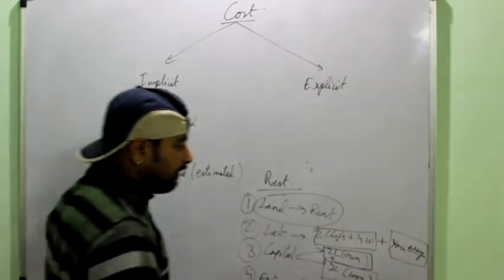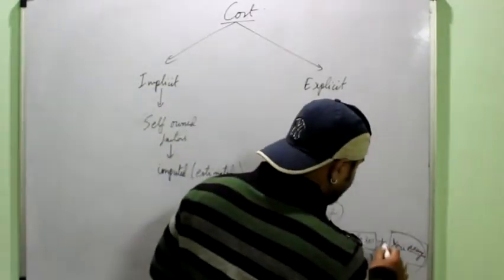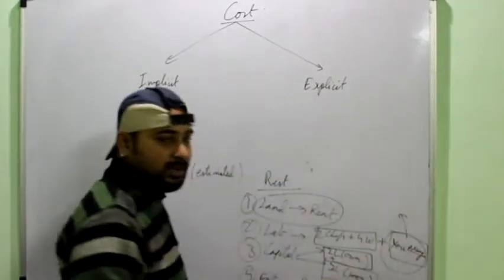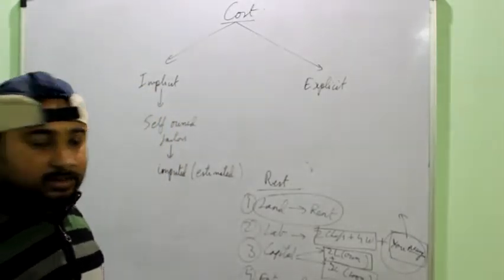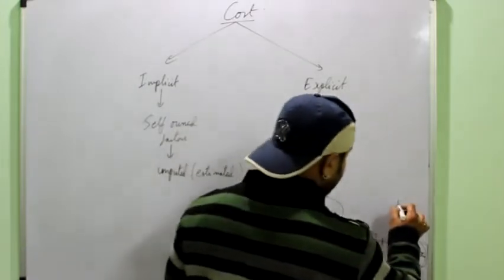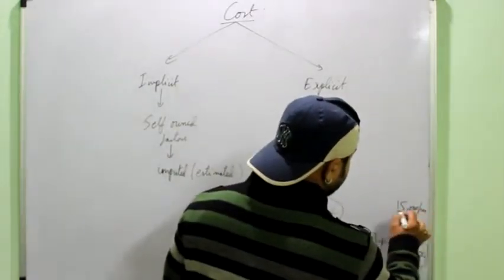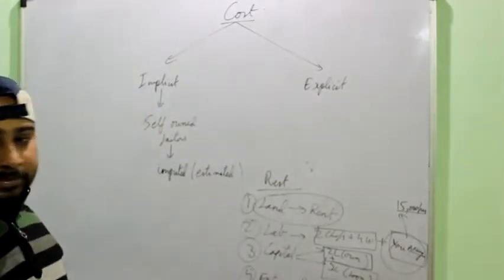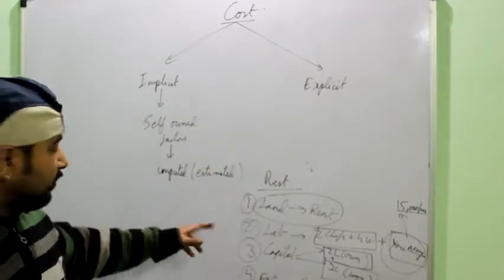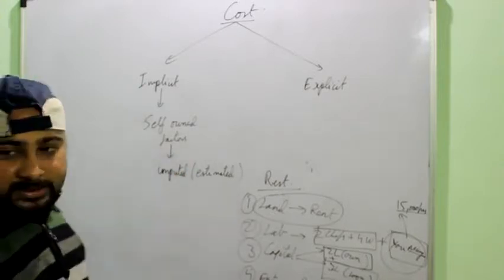Like for example, if I have to take out the estimated value of my service, I will simply see how much would I have to pay to a manager if I hire him at my restaurant. Suppose he would have taken the salary of say, 15,000 per month. So, this is my implicit cost. I will not pay it to anyone but when I calculate, I can put the imputed value of the implicit cost.